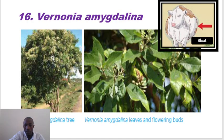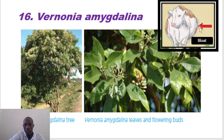Then we have Vernonia amygdalina, which is used in control of bloat, whereby you can see the animal's left side of the rumen is extended.